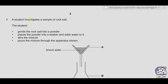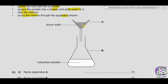Question 1. A student investigates a sample of rock salt. The student grinds the rock salt into a powder, then places the powder into a beaker and adds water, stirs the mixture, and pours the mixture through the apparatus shown. We have two things: one is a filter funnel and second is a conical flask. The brown solid is the mixture of salt with water which is filtered and then a colorless solution is obtained. Apparatus A is the filter funnel.